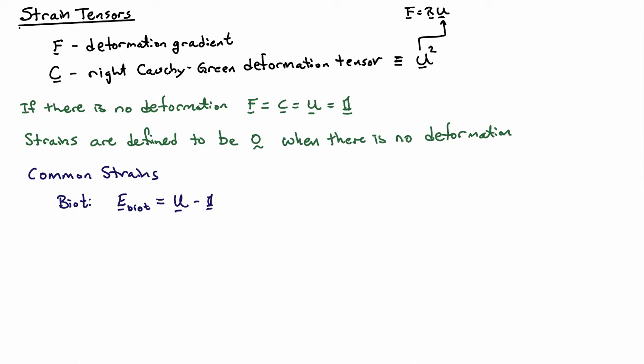So you can see easily that when there's no deformation, U is equal to the identity. So we get identity minus identity is equal to zero for the Biot strain. So this is a very common strain that's used in finite deformations.